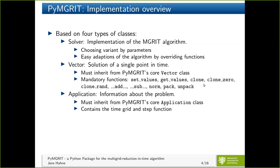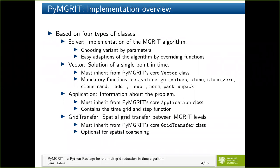The next type of class is the application class, which contains information about the problem: on one hand the time grid, and on the other hand the step function — our time integrator. Again, we have to inherit from a superclass. The fourth type is an optional class: if you want to use spatial coarsening, you can implement the grid transfer class. If you don't want spatial coarsening, you don't have to care about it.